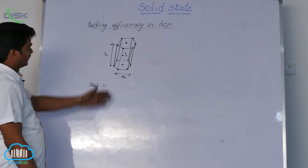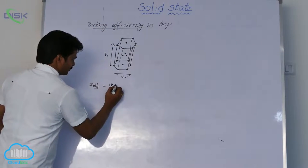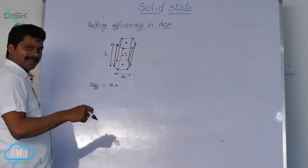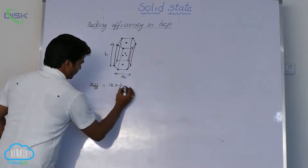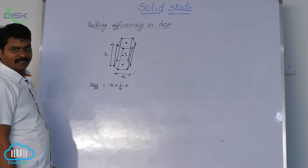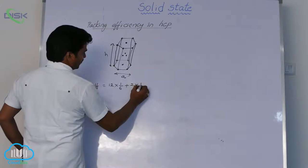Earlier I discussed, here how many corner atoms? Total 12. So 12 into each corner atom in hexagonal system contributes 1 by 6. So 12 into 1 by 6, plus each base centered atom in hexagonal system contributes 1 by 2. So 2 into 1 by 2.